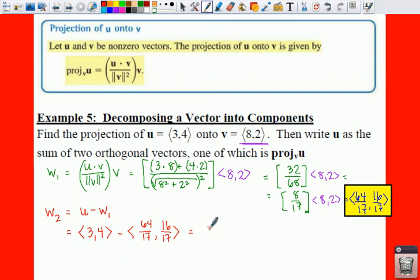Which is equal to, once you change all these, I guess we better do that because I don't want some of you to be freaked out about not knowing how to add and subtract fractions. Make this 51 over 17 minus 64 over 17, comma 68 over 17 minus 16 over 17. All I did is find your common denominator. This ends up giving you negative 13 over 17 comma, 68 minus 16 is 52 over 17. So that is your W sub 2.